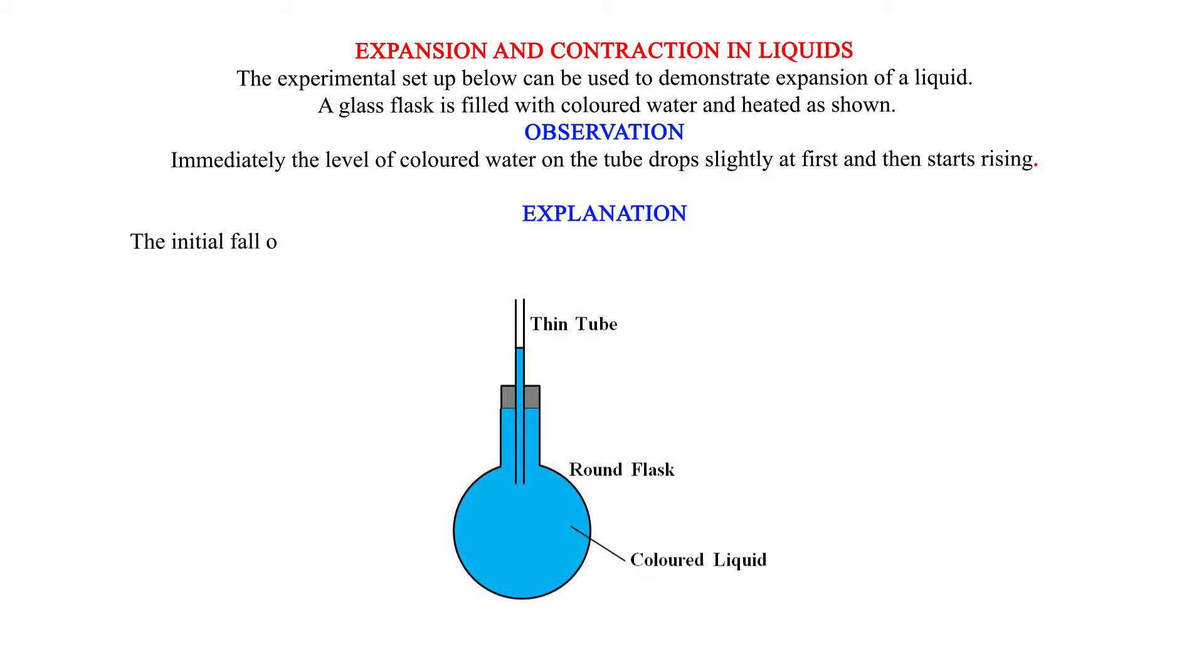Explanation: The initial fall of the level of the water is due to the expansion of the glass flask which gets heated first. The water starts expanding when heat finally reaches it and it rises up the tube.